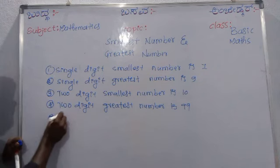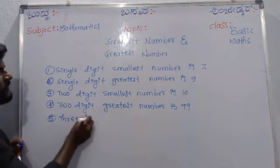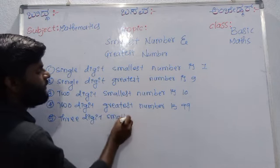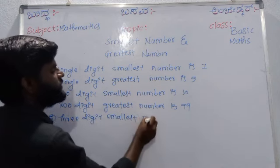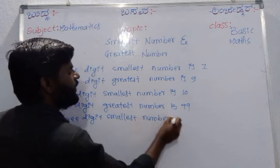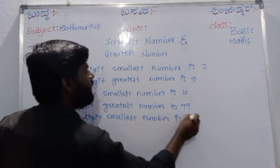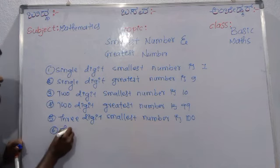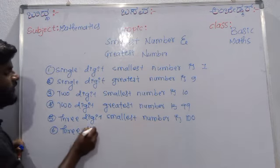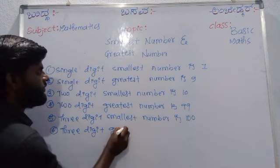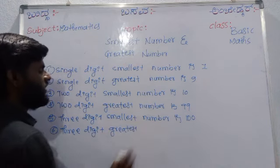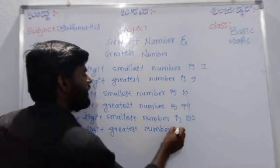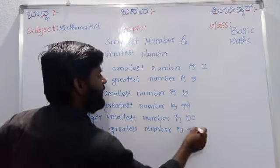Fifth, three digit smallest number is 100. Sixth one, three digit greatest number is 999.